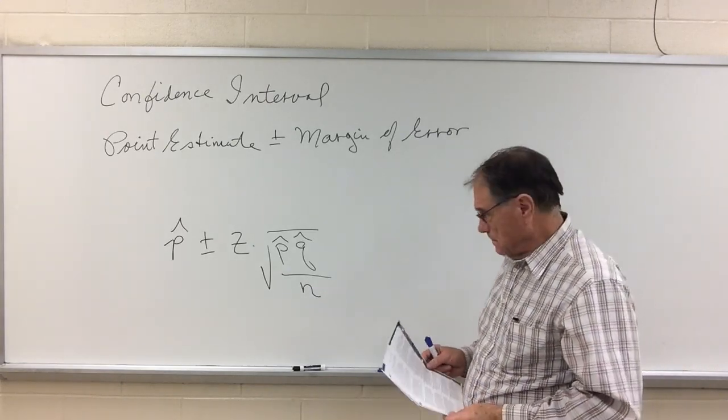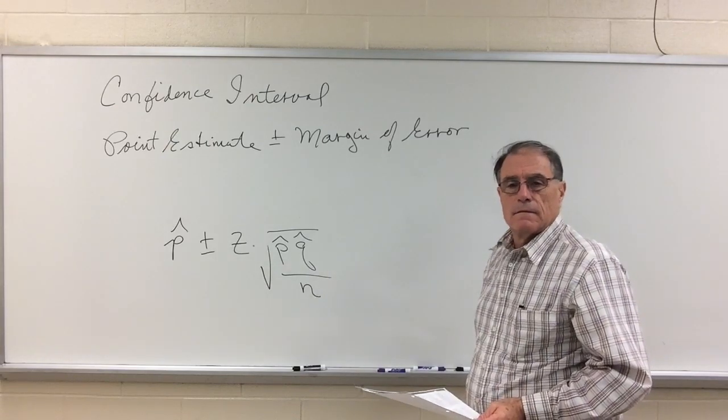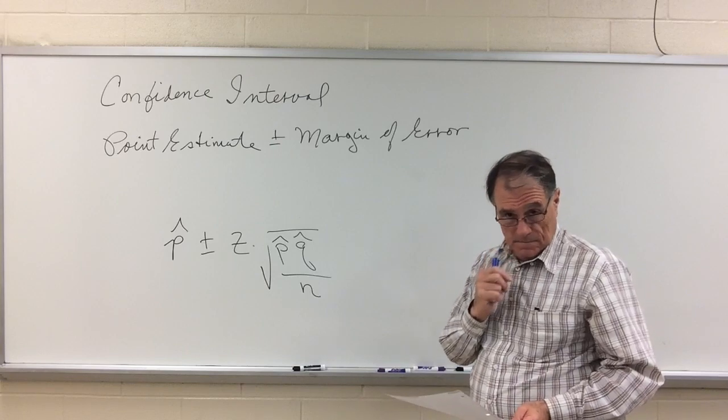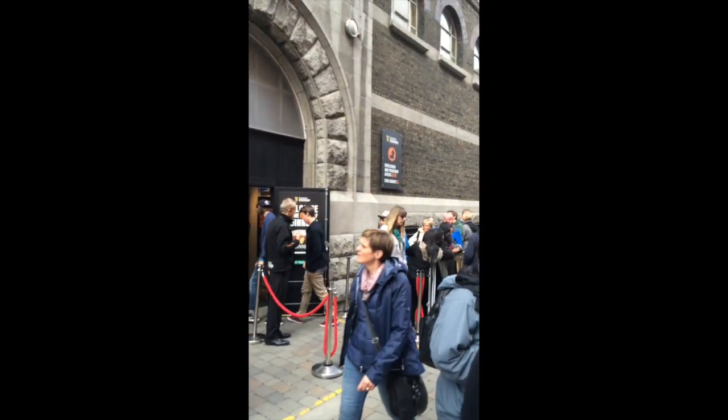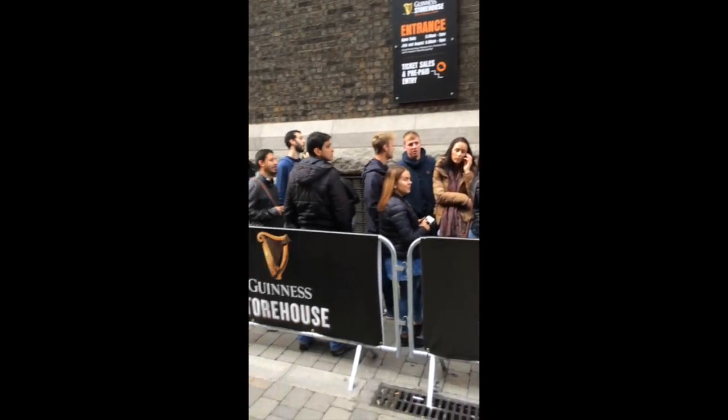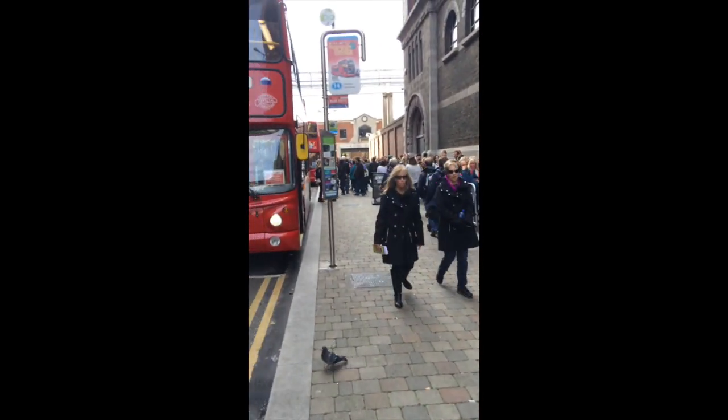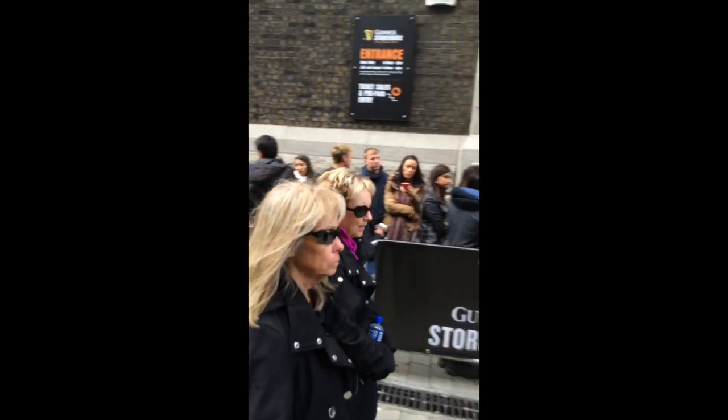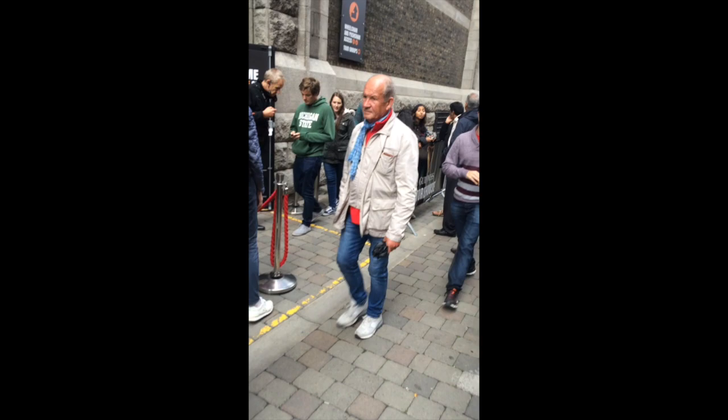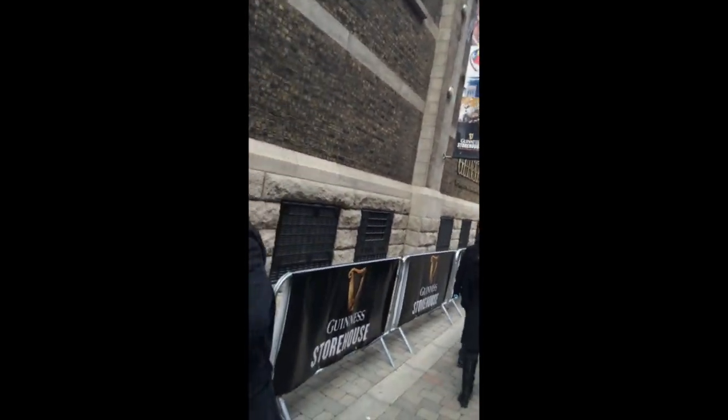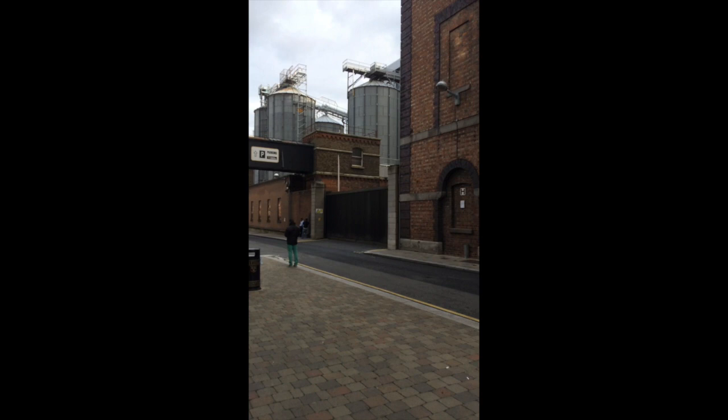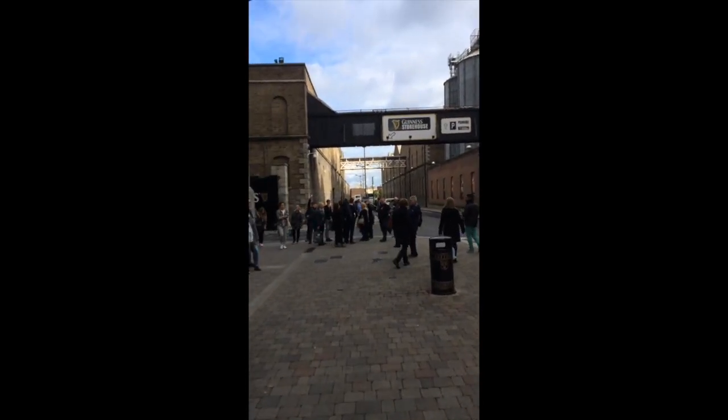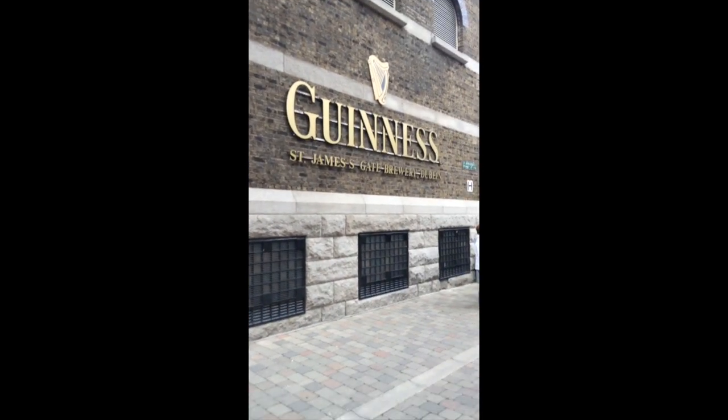Now let's take a look at the confidence interval for a proportion. The entrance to Guinness storehouse, as you see, has quite a collection of people waiting to get in. The admission is 20 pounds just to walk in the place. So we'll view it from the outside. Now, the significance of William Gossett's work when he was here at the beginning of the 20th century, working here in Dublin, working for Guinness.